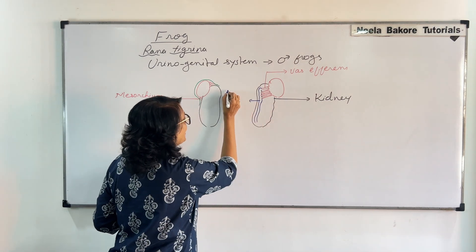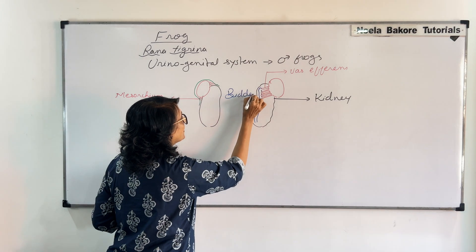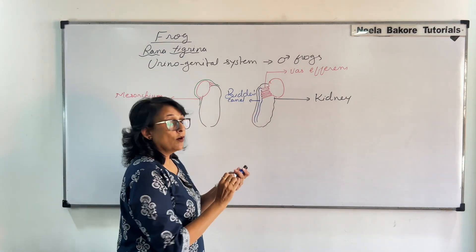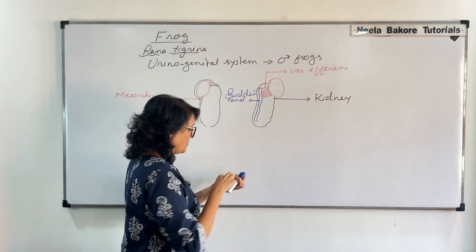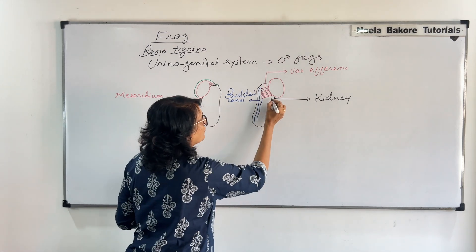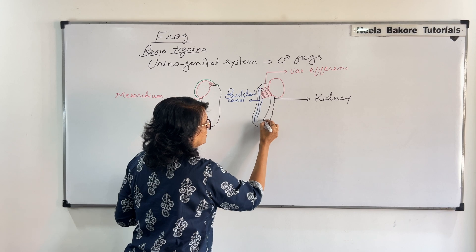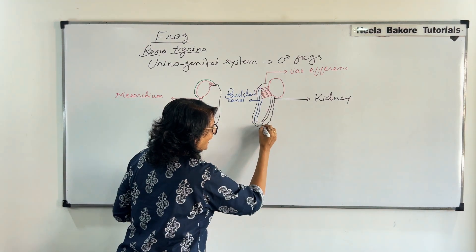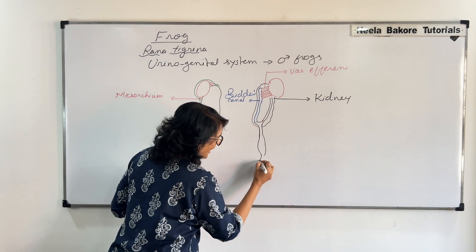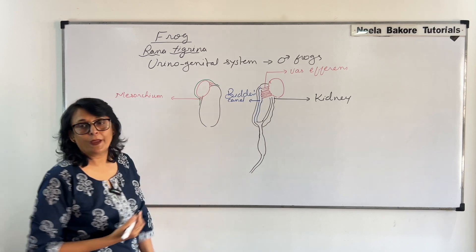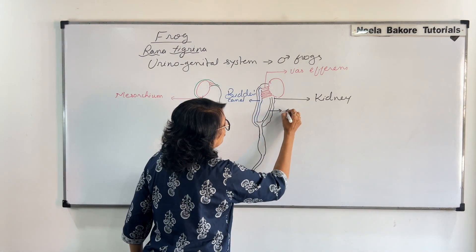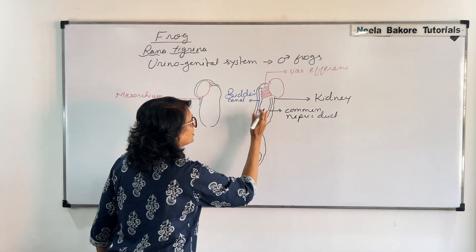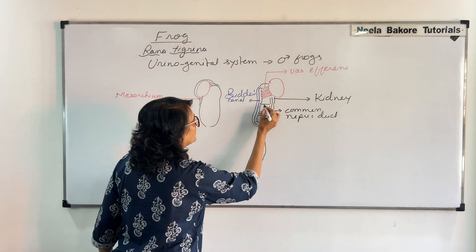This tube is known as the Bidder's canal — very, very important. It is called Bidder's canal. From the Bidder's canal, this is the canal which is coming here. As we said, in the kidney are present the nephrons. Here are the tubes formed by joining of the nephrons, and these two join — there is a slight swelling here — and this opens into the cloaca. This is the common nephric duct, one lateral. And there are connections between the Bidder's canal and the nephric duct also.